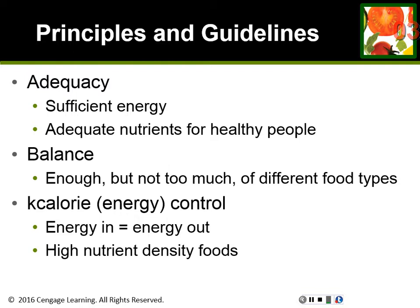Calorie control — calorie and energy mean the same thing, so think of this as energy control. Energy in needs to equal energy out. Energy in is the calories you're taking in from food. Energy out is how many calories you're using each day — you burn 1,000 to 1,500 calories a day just by living and breathing, and then physical activity like walking to class, going to the gym, walking the dog, or cooking dinner burns even more on top of that. So your energy out is what you burn each day, and you want those to balance.